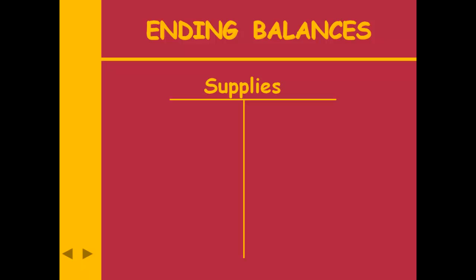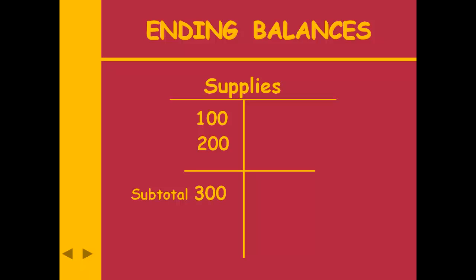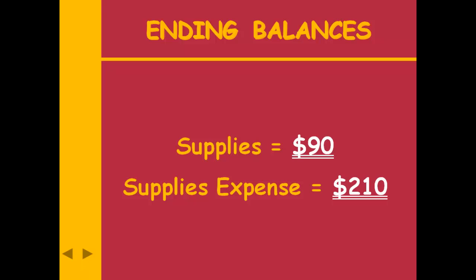Let's see the balance in supplies. I had $100 to begin with. The first journal entry debited supplies for $200, giving $300. The adjusting entry credited supplies for $210, leaving a $90 debit balance. That matches what we physically had left. The ending balance in supplies expense is $210. Notice: $90 plus $210 equals $300 — we had $300 in supplies total during the period.